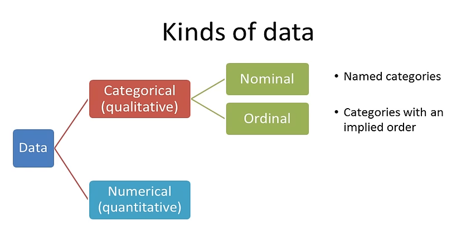Ordinal is where there's categories, but there's some kind of order. Big, medium, small. Best, preferred, acceptable, maybe, no way. Although they're categories, there's an implied order to them.